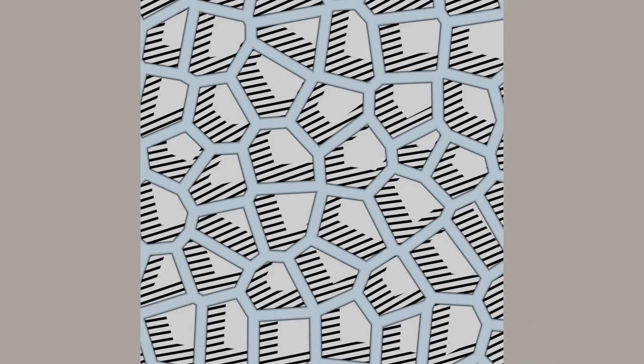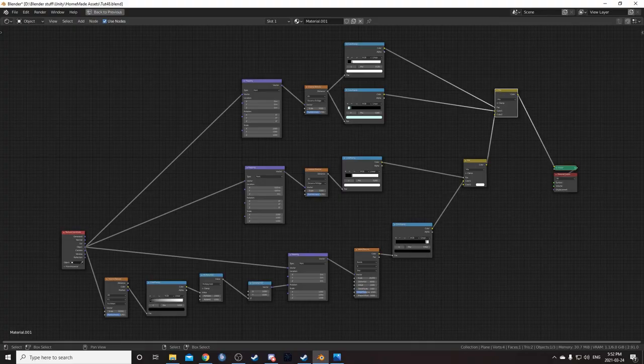This is the second texture we're going to create. Take a second and try to guess what you think this is made up of. You might have guessed it's kind of a Voronoi distance to edge mixed with a wave texture, and kind of overlaid with another Voronoi distance to edge. So I'll show you how I set that up.